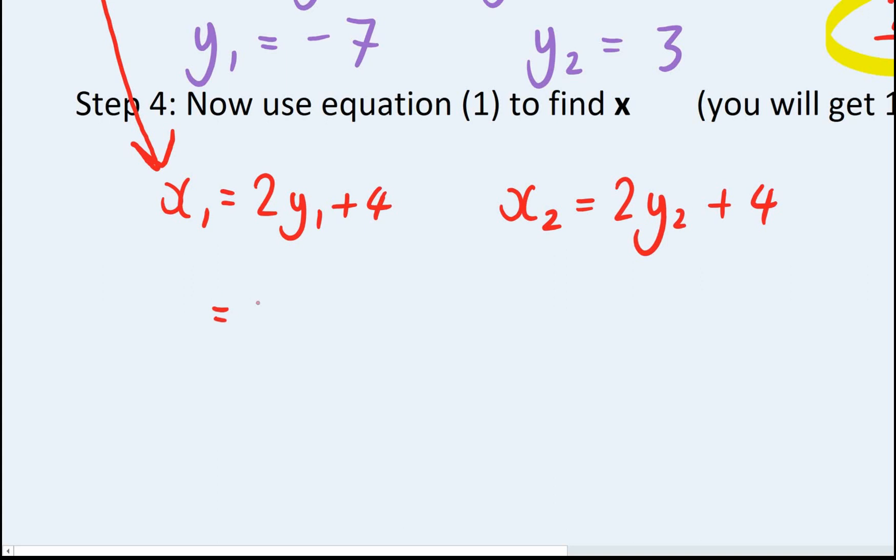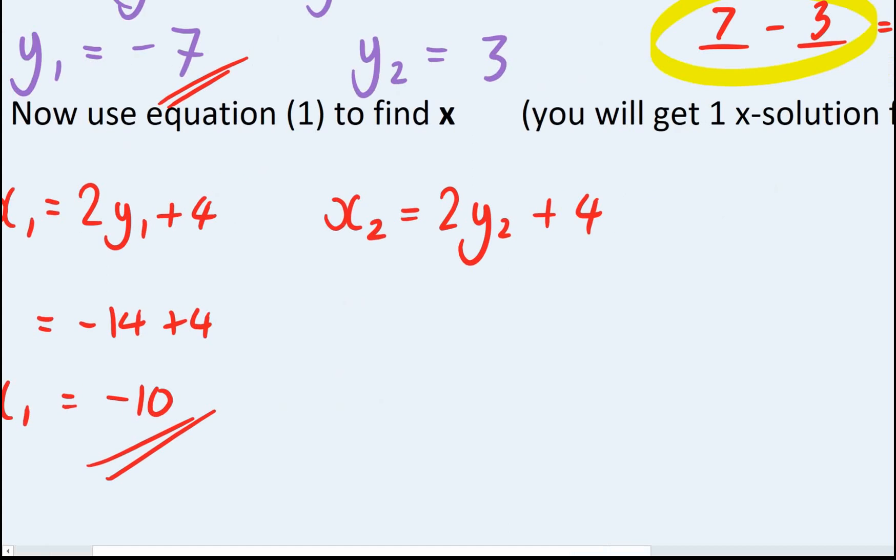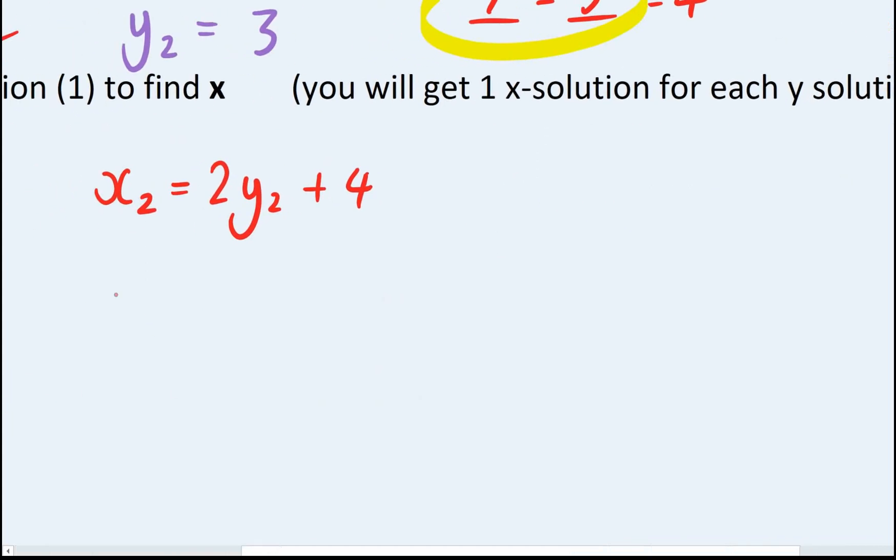So x1 is going to be 2 lots of minus 7, which is minus 14 plus 4. So x1 equals minus 10. And again, that's one pair of solutions. These two always stick together. And I'll do the same thing over here. x2 is going to be 2 lots of 3, which is 6. Which means x2 is 10. And this is my other pair of solutions.